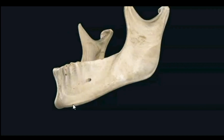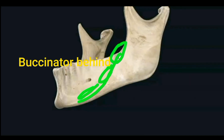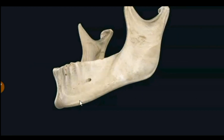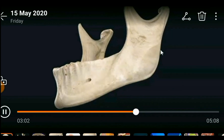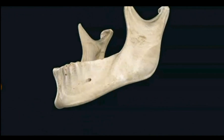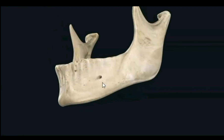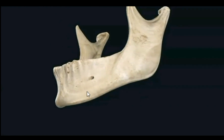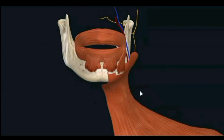The mental foramen transmits mental vessels and the mental nerve, which are continuations of the inferior alveolar structures. The oblique line extends from the lower border to the upper border below the mental foramen, giving attachment to three structures: anteriorly, depressor labii inferioris and depressor anguli oris; posteriorly, some fibers of buccinator. Just below the oblique line is the attachment of platysma muscle. At the junction with the ramus, facial vessels course just anterior to the masseter muscle.